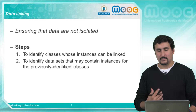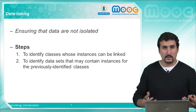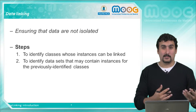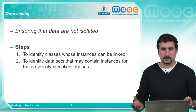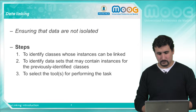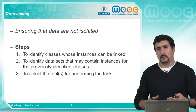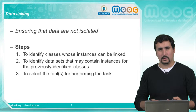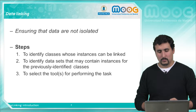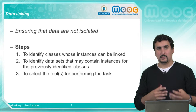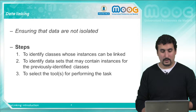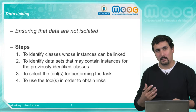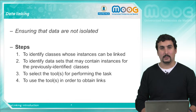Then we have to identify datasets that may contain those classes. If we are talking about cities for example, we need to find datasets that contain information about cities. Then we have to select tools — we will see later which tools we can use. We need a tool that fits our needs, and finally we have to tune this tool to our purposes and execute it to obtain the links.